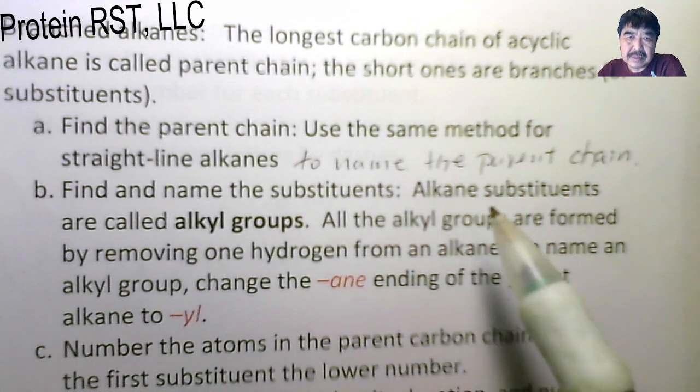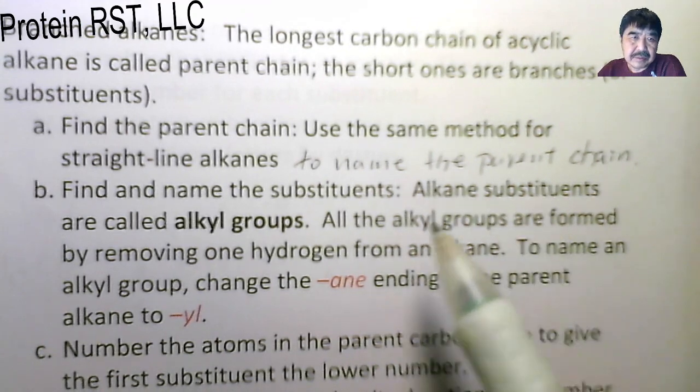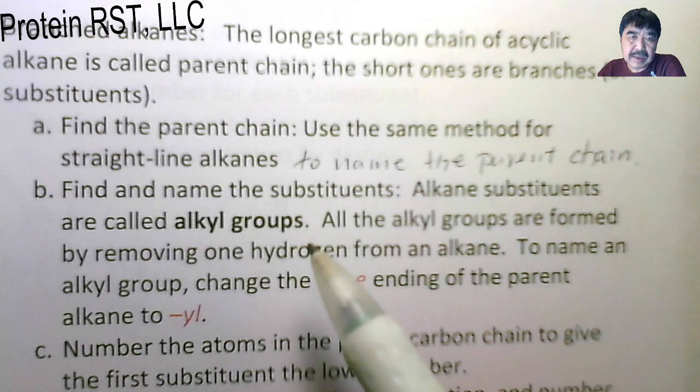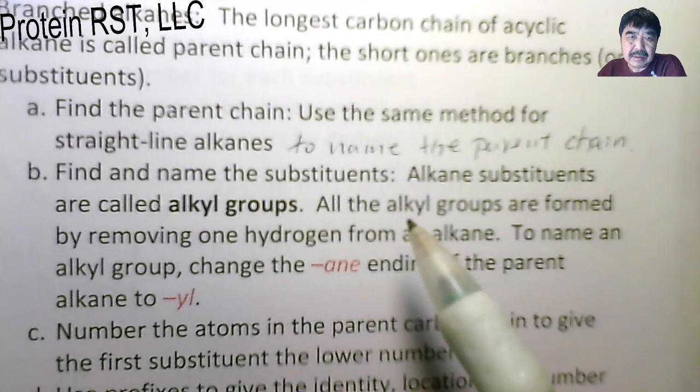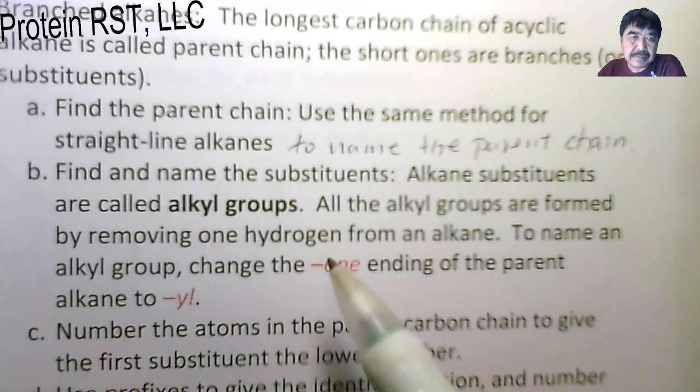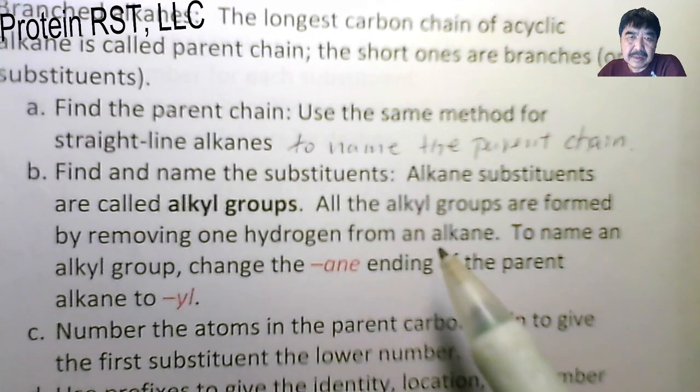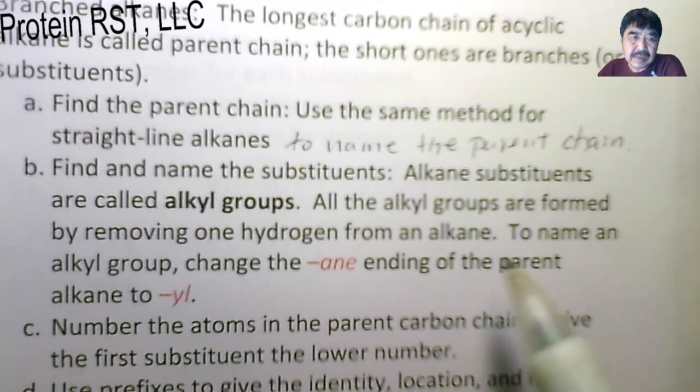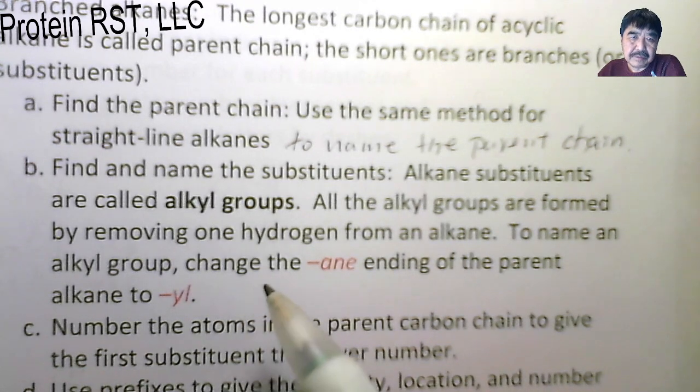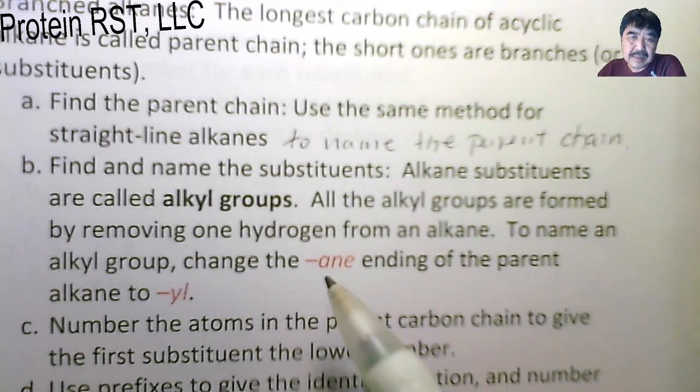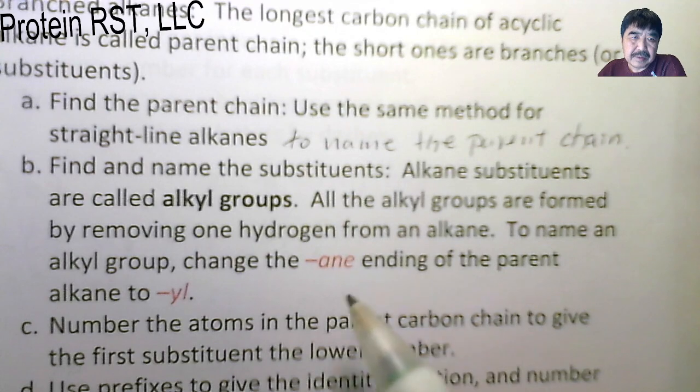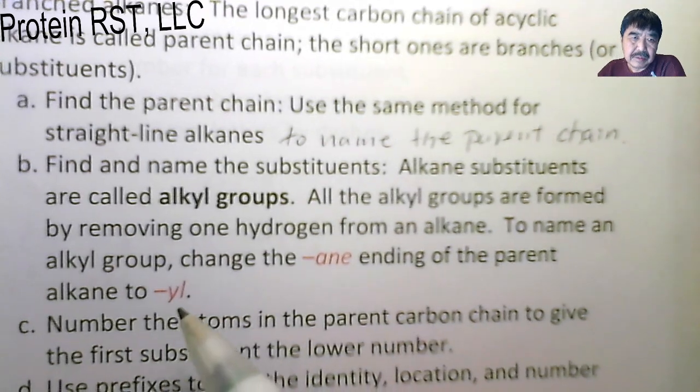Alkane substituents are called alkyl groups. All the alkyl groups are formed by removing one hydrogen from an alkane. To name an alkyl group, change the A-N-E ending of the parent alkane to Y-L.